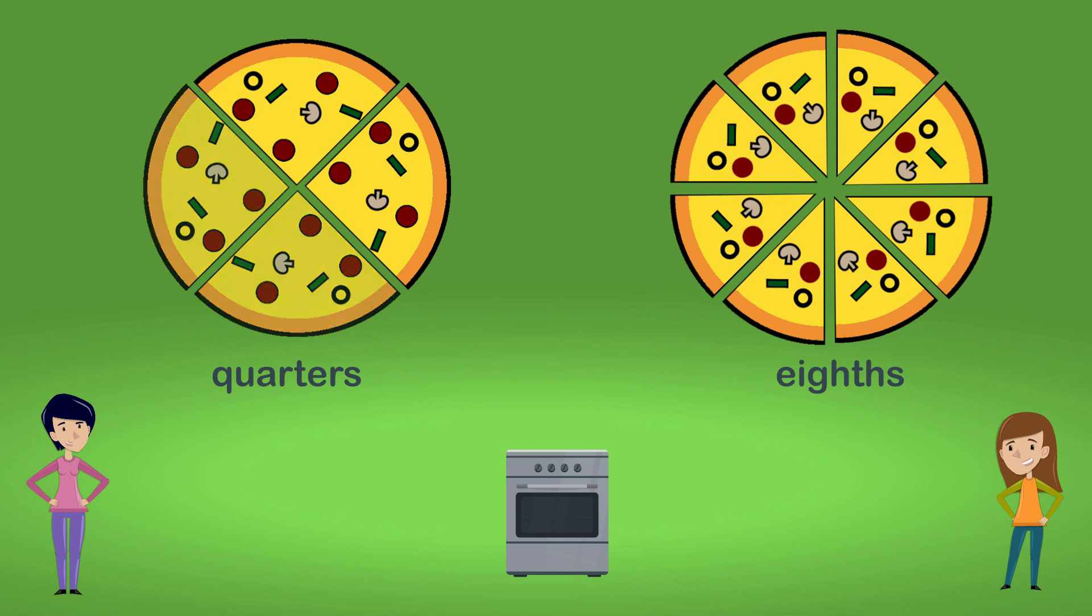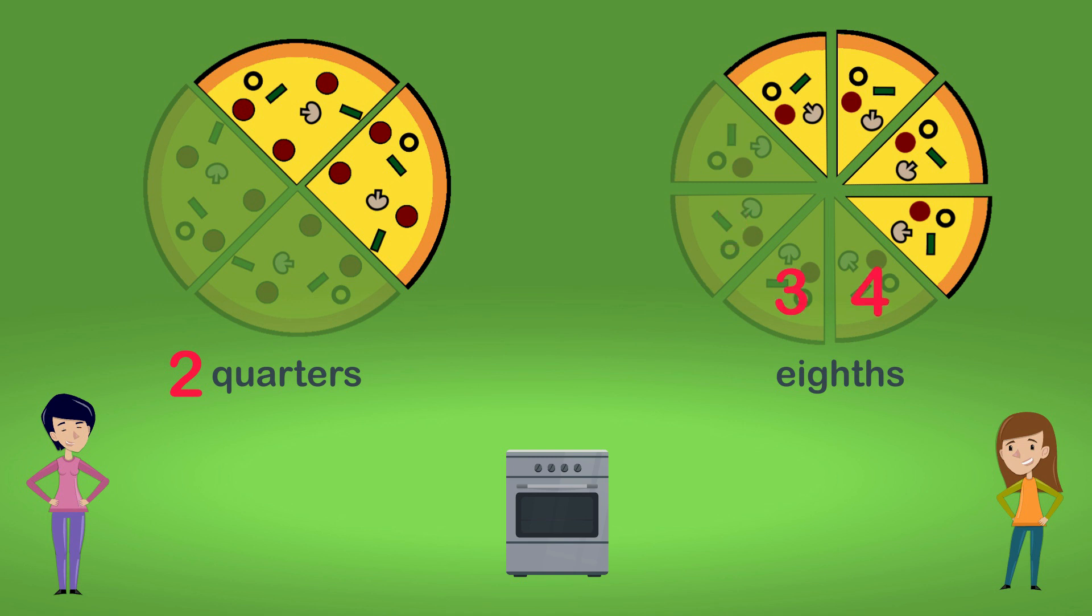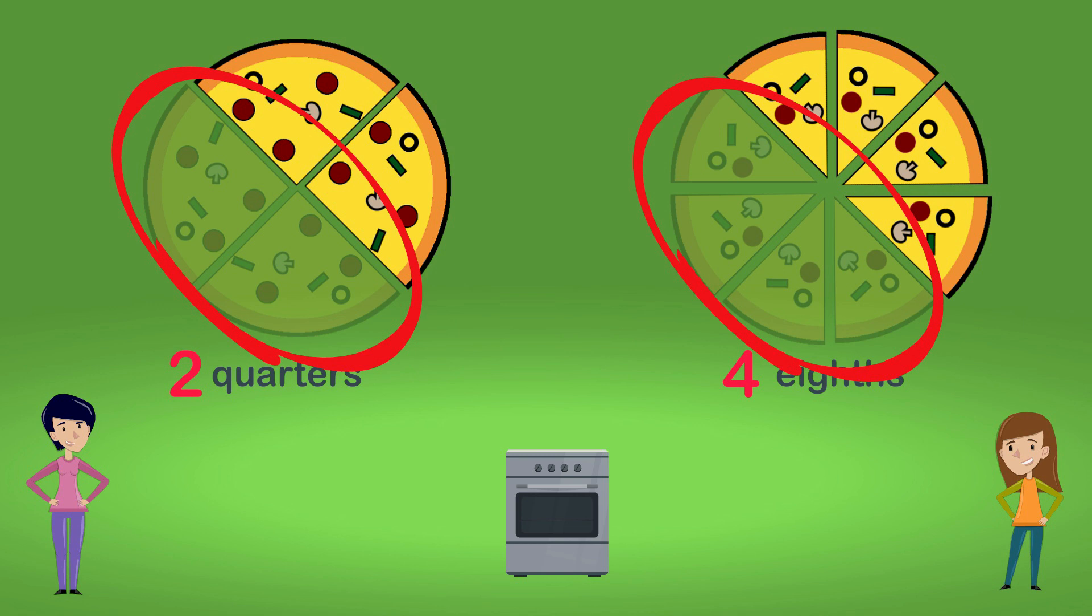Sam eats two of her quarters and Lily eats four of her eighths. We can see that they have actually eaten the same amount of pizza. Two quarters and four eighths are equivalent fractions.